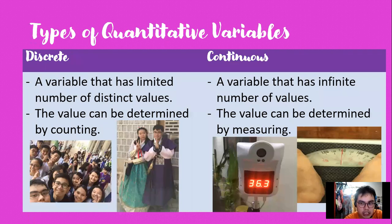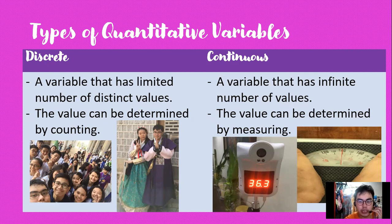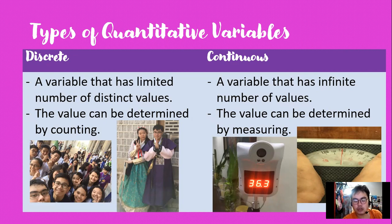Let me discuss the two types of quantitative variables. When we say discrete, it is a variable that has a limited number of distinct values — it is countable. No matter how many students, no matter how many buildings Manila has, this can be determined by counting.